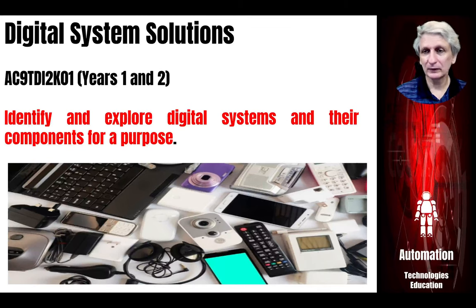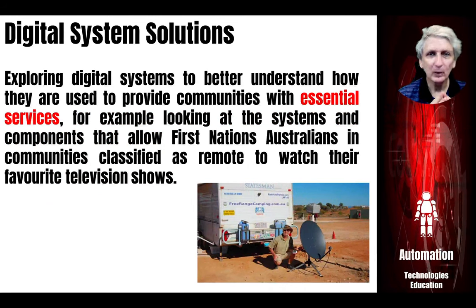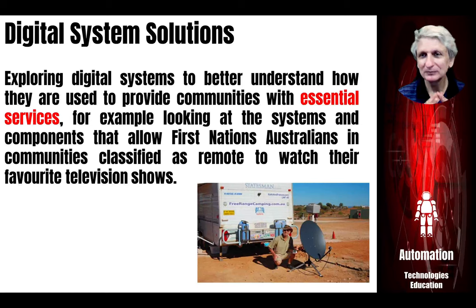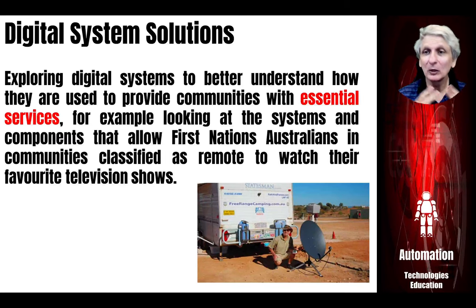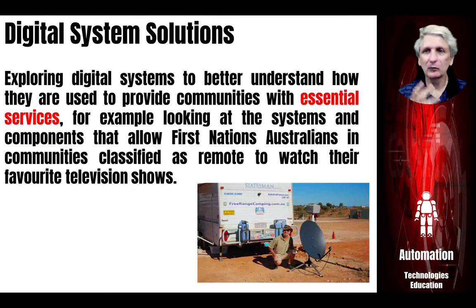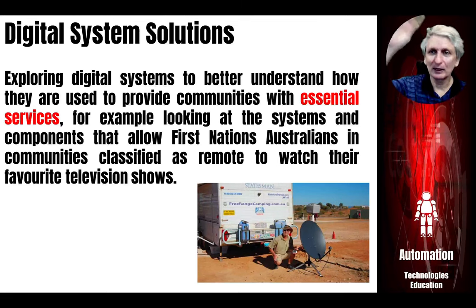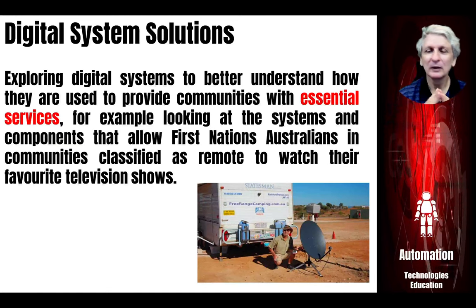One elaboration looks at essential services needed in Outback Australia so that First Nations Australians can watch TV. In cities we put up an aerial connected to our TV, but not everyone has that advantage — some have to use satellite TV. Students could explore how a satellite dish connects to a satellite, which connects back down to a ground station connected to the transmission network. Even the idea that television signals are transmitted from somewhere to our TVs will be new for younger students — learning that information can be transmitted from one location to another through digital devices.